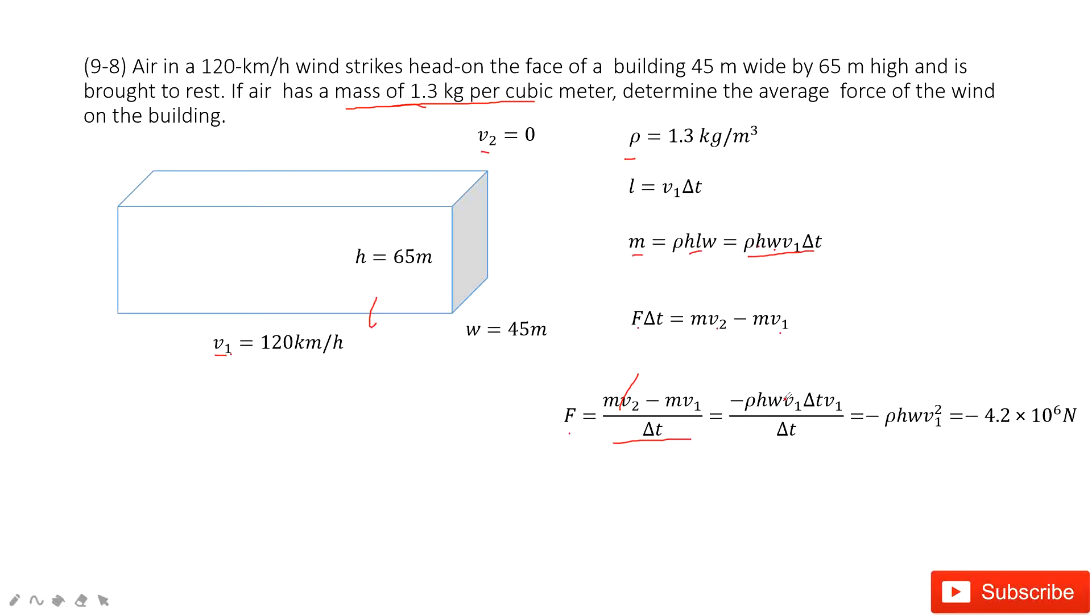See, Δt and Δt can be canceled. We just get this variable. Very perfect equation. See, look inside this equation. Density is given, h is given, w is given, V1 is given. So very easily, we can get the force. Thank you.